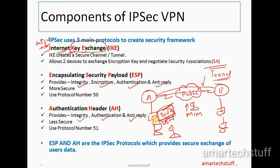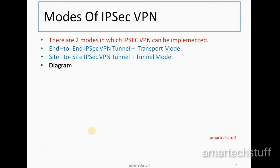The key difference between ESP and AH is that ESP provides encryption whereas AH does not. That is why ESP is more secure than AH. ESP uses port number 50 whereas AH uses port number 51. So the three important components of IPSec VPN are IKE, ESP, and AH.